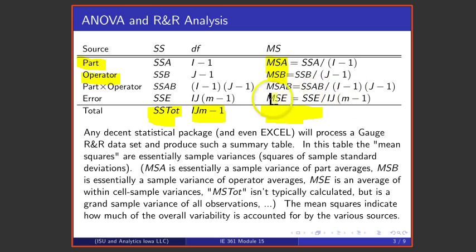The mean square for error is essentially a pooled sample variance gotten from the I times J different cells of the gauge R&R table.